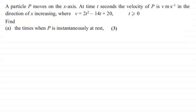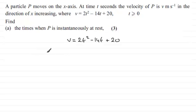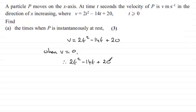Okay, welcome back. This is fairly straightforward. We have v given by the equation 2t squared minus 14t plus 20, and when P is instantaneously at rest we would expect v to be zero. So when v equals zero, we equate that to zero and we've got 2t squared minus 14t plus 20 equals zero.